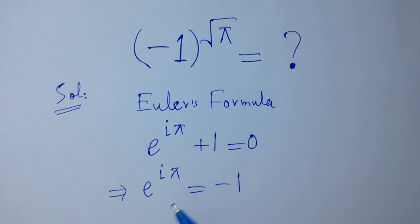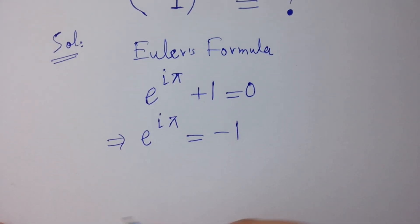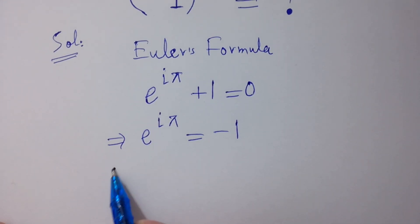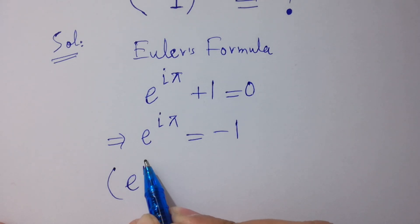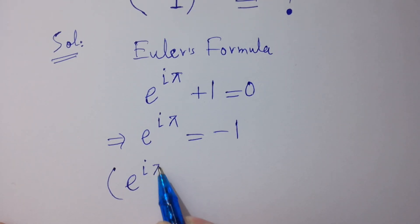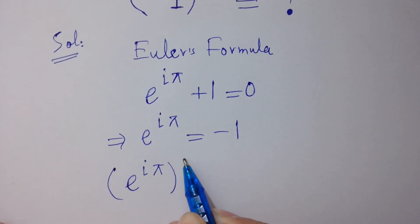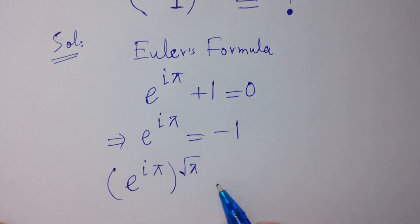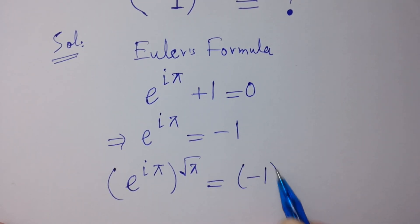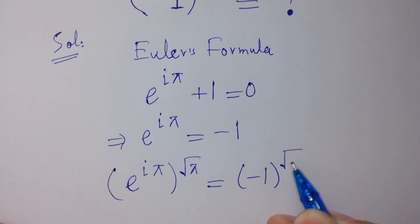Since this has an exponent of square root of pi, we take the exponent of square root of pi on both sides: e to the power i*pi, to the power square root of pi, equals minus 1 to the power square root of pi.